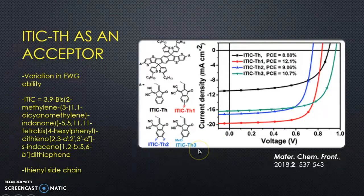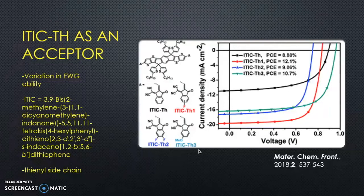The thionyl side chain is important because it showcased the sigma inductive effect and matched two different band gap donors at narrow and wide. This is interesting because it matched two different energy levels. When it comes to matching donor molecules, you have this increased pool of available matches between acceptors and donors with non-fullerenes versus fullerenes. You can realistically tune a non-fullerene acceptor molecule to match a desired donor.